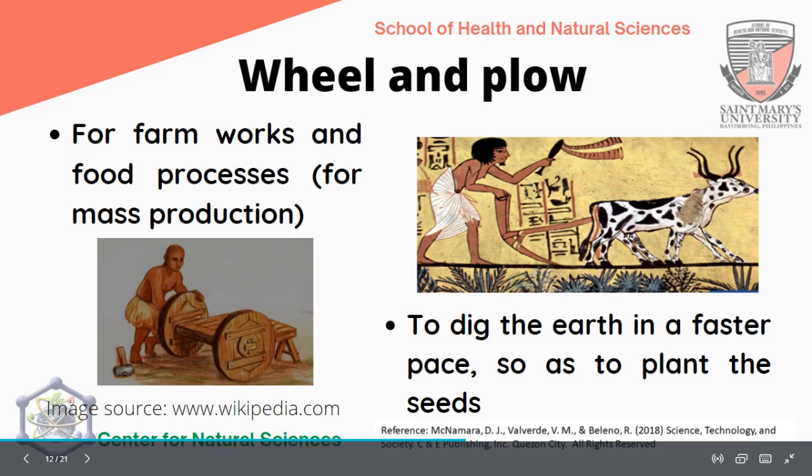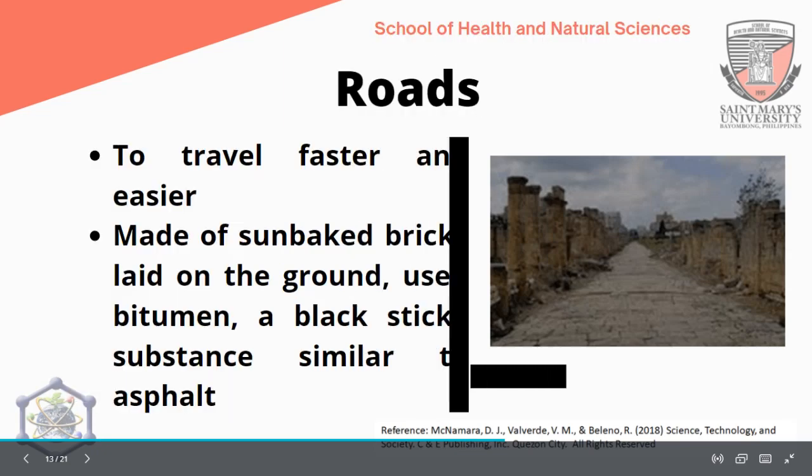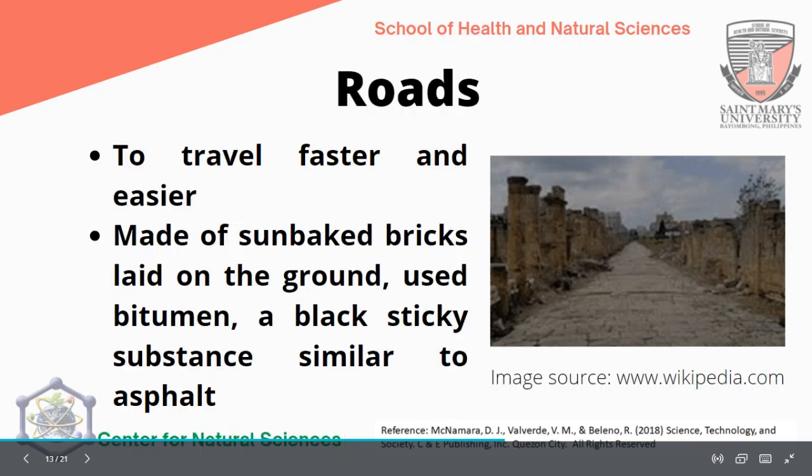The wheel and plow — used for farmwork and wood processes, or for mass production. The use of the wheel and plow became beneficial in farming and mass production, to dig the earth at a faster pace so as to plant seeds. Roads were also developed to travel faster and easier. Even now, we use roads for transportation.